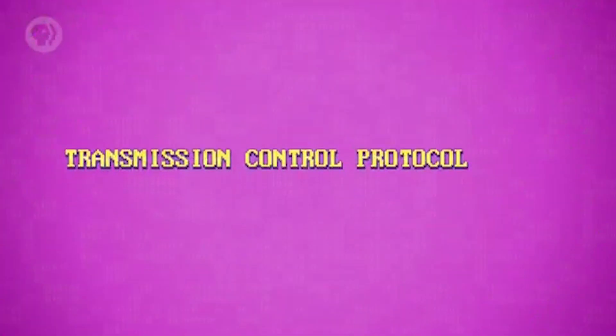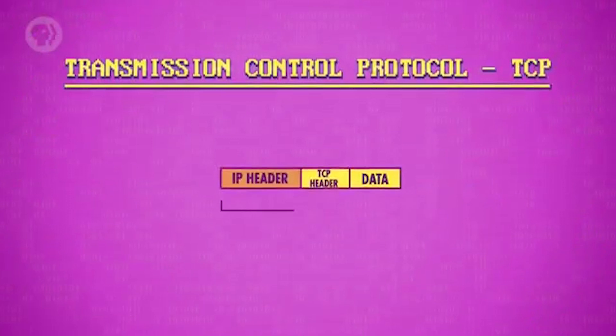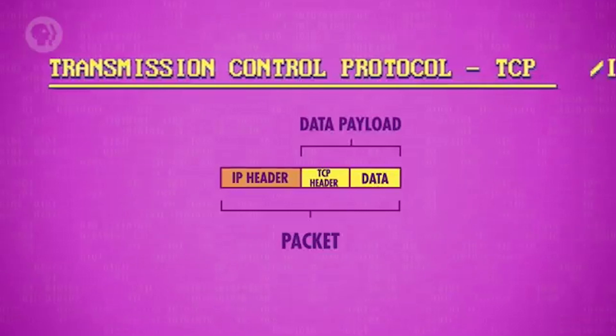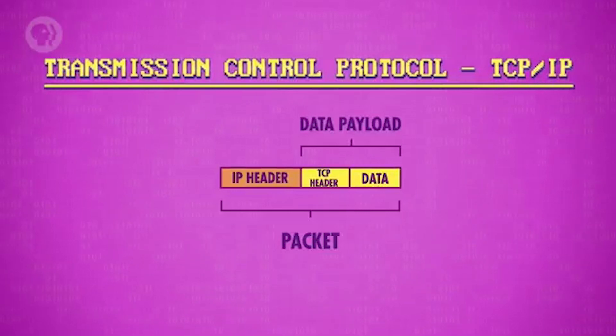When it absolutely, positively needs to get there, programs use the Transmission Control Protocol, or TCP, which, like UDP, rides inside the data payload of IP packets. For this reason, people refer to this combination of protocols as TCP/IP. Like UDP, the TCP header contains a destination port and checksum, but it also contains fancier features, and we'll focus on the key ones.